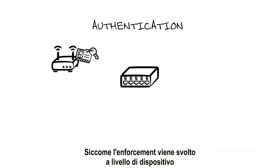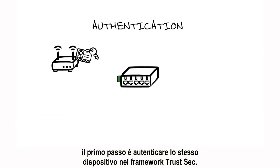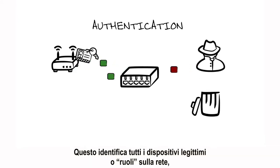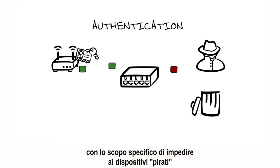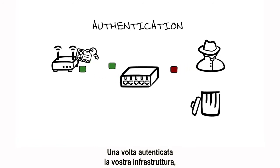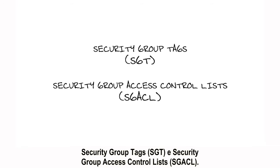Since the role of enforcement is actually done at the device level, our first step is to authenticate the device itself within the TrustSec framework. This identifies all legitimate devices or roles on your network with the express purpose of keeping rogue devices from entering and being used as an attack vector. Once your infrastructure is authenticated, you need to look at two key concepts: security group tags and security group access control lists.